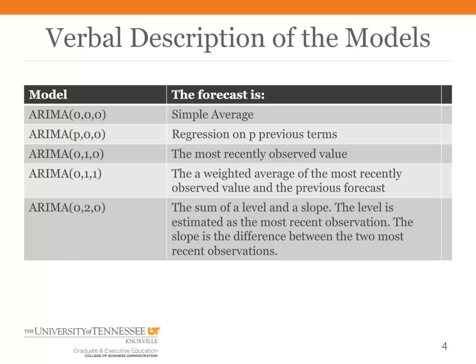And then we looked at the random walk model, the ARIMA(0,1,0). And there the forecast is just the most recently observed value. And then we've looked at the exponential smoothing model, that is the ARIMA(0,1,1). And the forecast is a weighted average of the most recently observed value and the previous forecast.